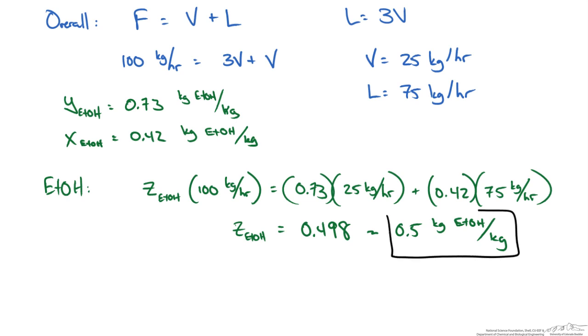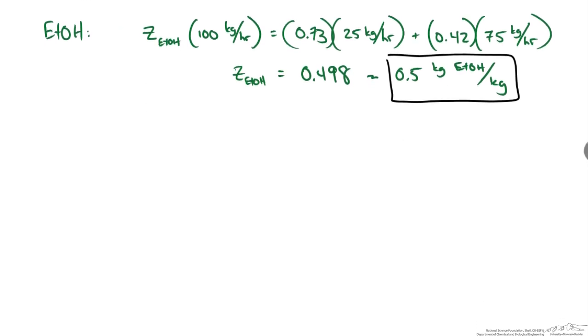So we have determined the composition in our feed stream as well as the compositions in our liquid and vapor streams. You could easily figure out what the mass fraction composition of water in those streams is. Since we know it is just a binary system it is just going to be 1 minus those fractions to determine that for water. So the next thing to do is to do the energy balance since we want to determine how much energy is removed from our feed stream.